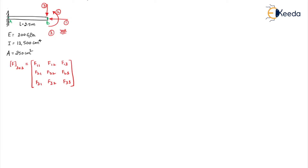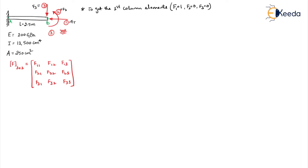To get the first column elements, we have to apply unit force in the direction of the first coordinate, whereas all other coordinate forces should be equal to zero. If we take this as F1, this as F2 and this as F3 — only for easier understanding. So in F1 I am applying a unit force and in F2 and F3 I am not applying any force. We should apply unit force and see what displacements are developed in the three coordinates.